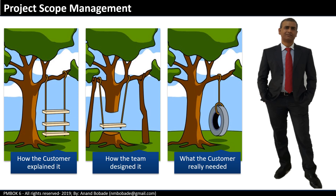This is where the scope management knowledge area helps the project manager. It helps in properly planning the scope activities, collecting requirements from authorized and responsible stakeholders, getting agreement or approval from concerned stakeholders, and finally ensuring what was agreed is delivered through the project — nothing less, nothing more.